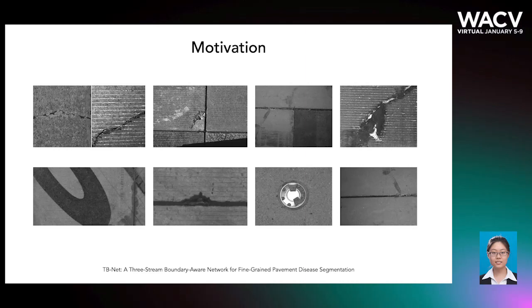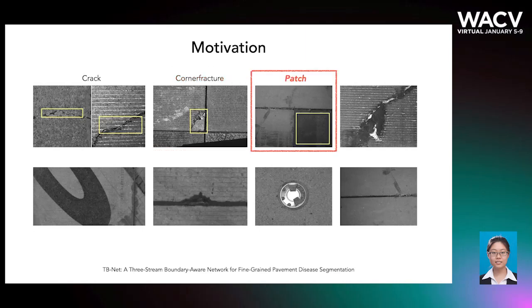In this work, we focus on eight types of pavement diseases. Let's first take a look at some examples. Crack has long thin shapes with different orientation angles. Corner fracture is the small brick in the corner of a block. Patch is the rectangle-like salmon patch, and repair is the strip-shaped asphalt repair.